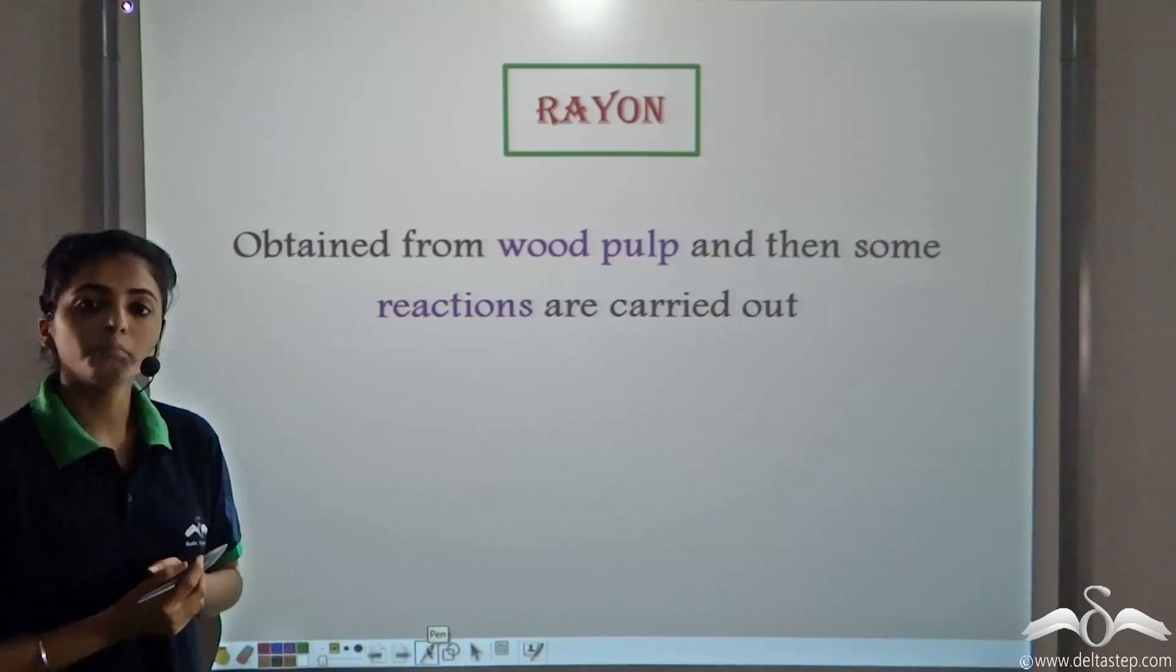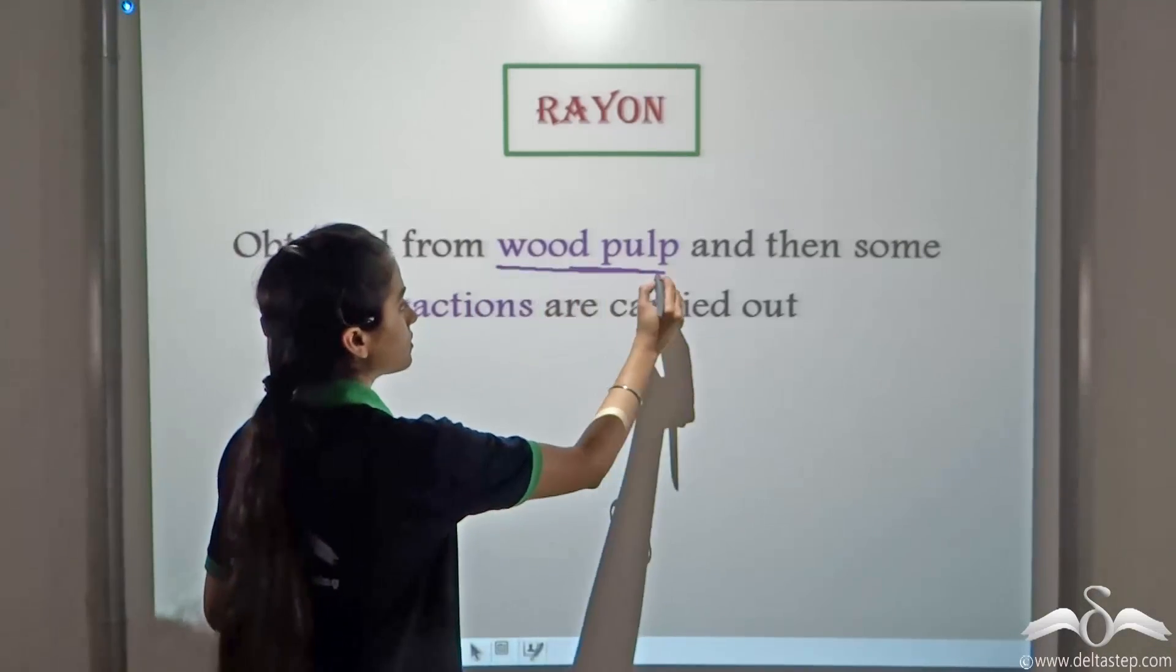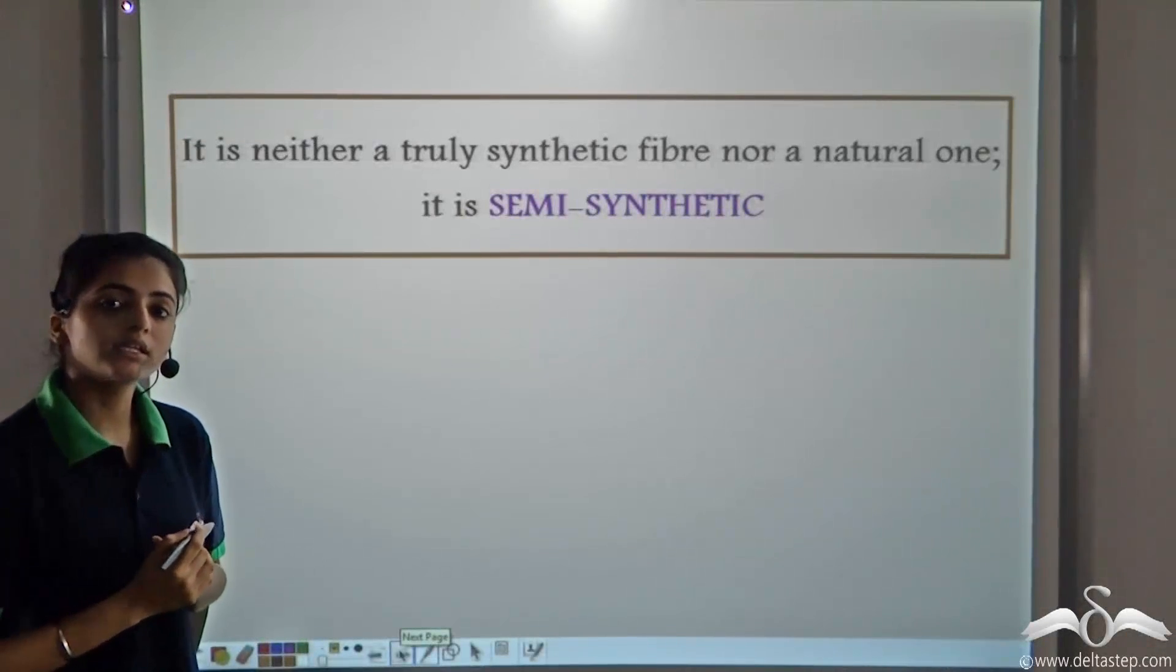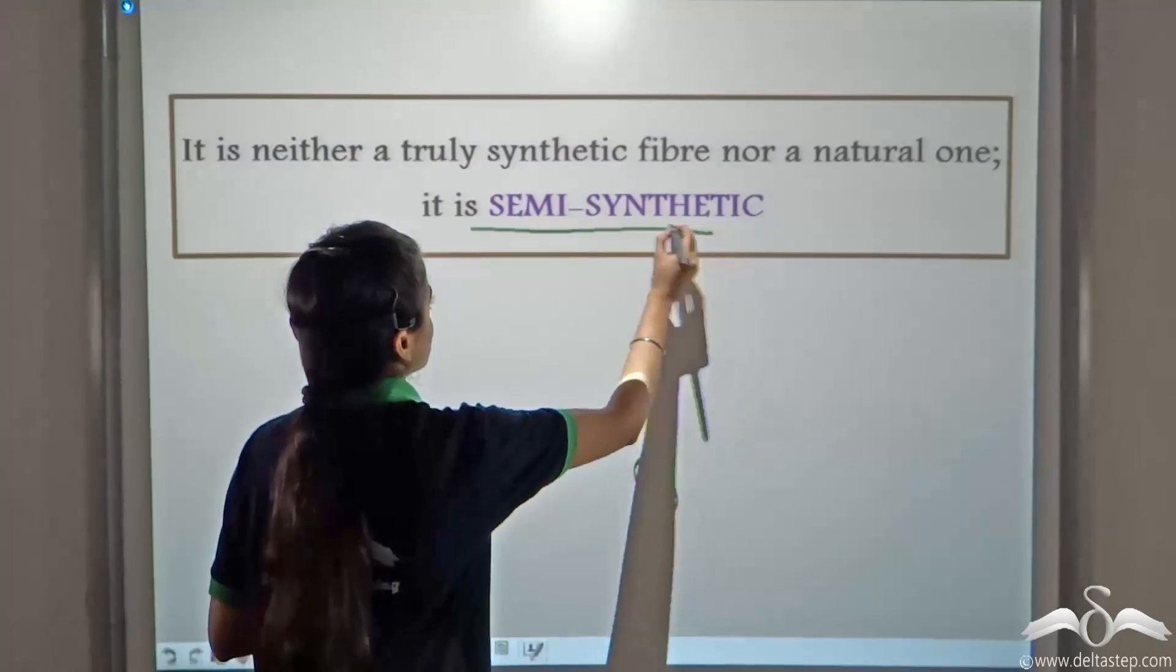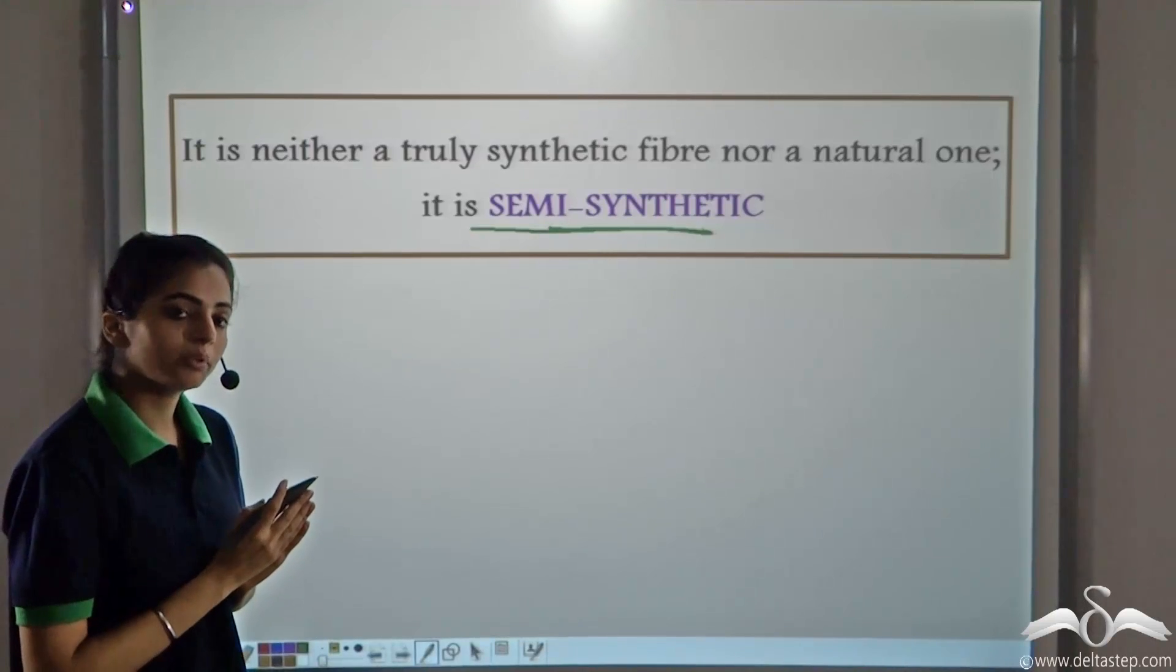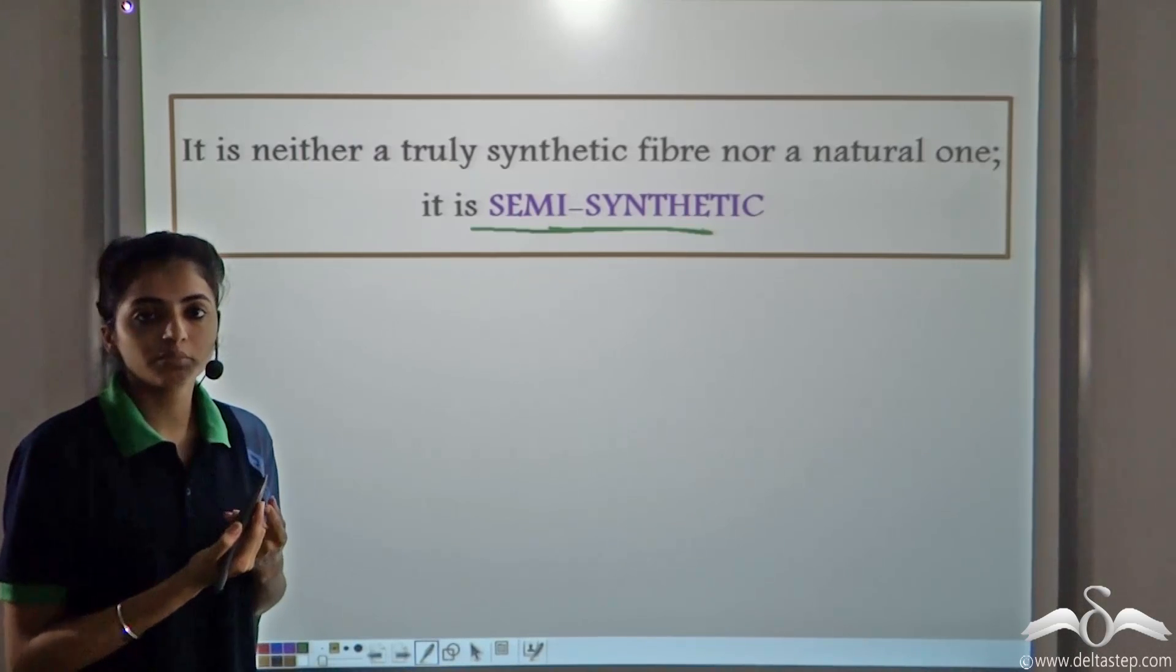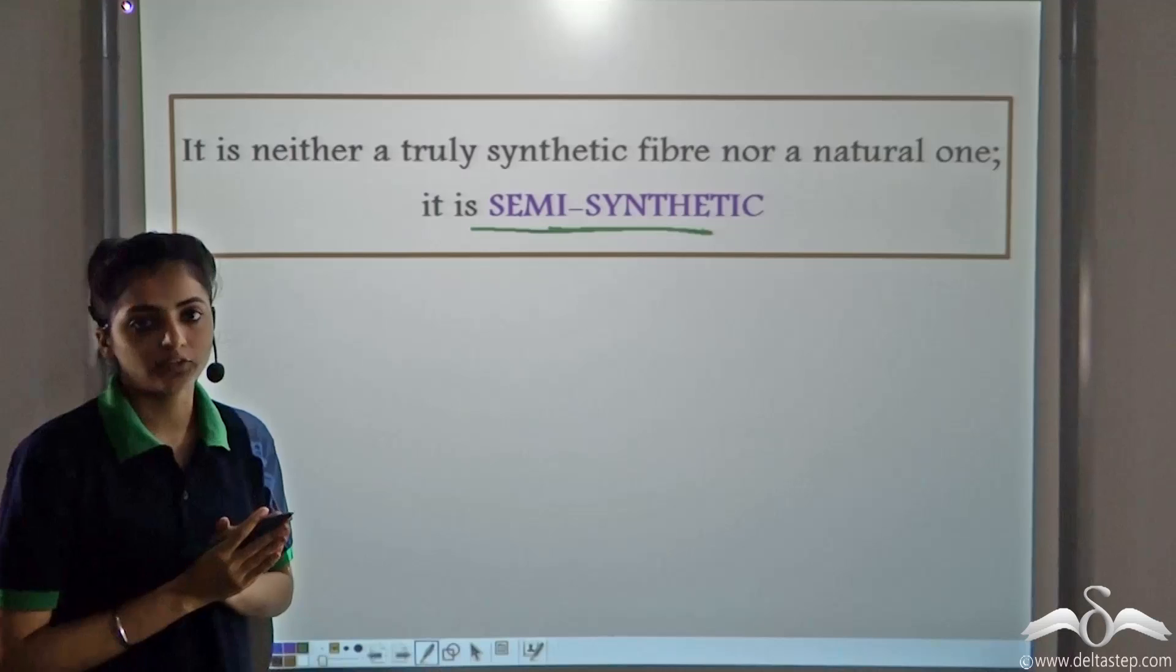For example, rayon. Rayon is obtained from wood pulp. But after obtaining it, we have to carry out some reactions. So rayon is considered to be a semi-synthetic fiber. It is neither a truly synthetic fiber, nor a natural one. So rayon, we obtain from wood pulp, and then we have to carry out some chemical reactions. So it is considered to be a semi-synthetic fiber.